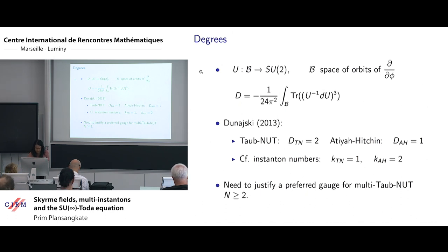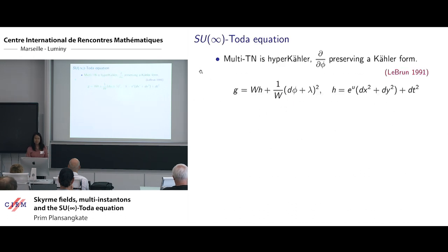Let me move on to the second part of the talk. One of the main results of this work is that we look at the induced metric on the space where the Skyrme field lives, and that is the orbit space of orbits of the axial symmetry. Our main result is to obtain an explicit expression for the solution of SU infinity Toda equation, which governs the metric on the space. Our result relies on a theorem by LeBrun.